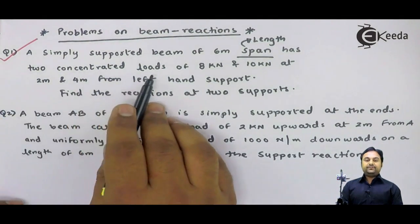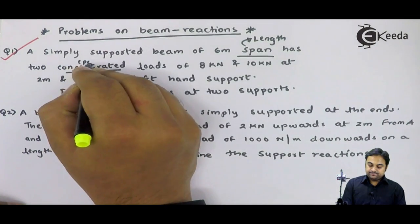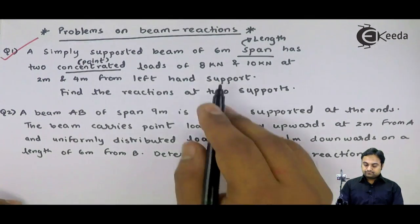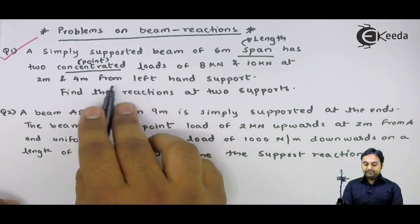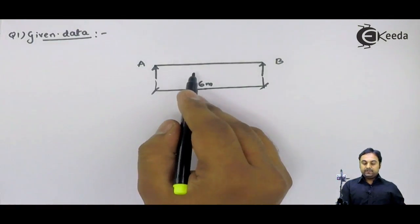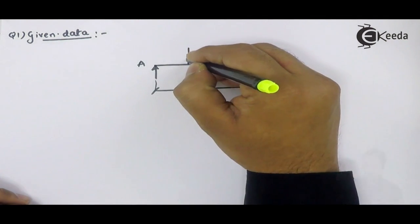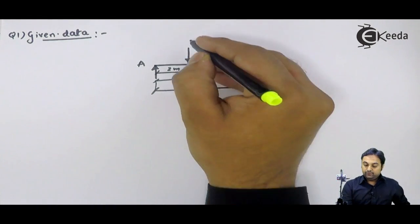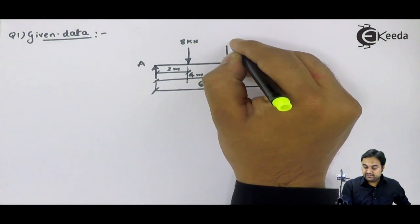The beam has two concentrated loads — meaning point loads of 8 kilo Newton and 10 kilo Newton at 2 meters and 4 meters from the left hand support. At 2 meters we have the 8 kilo Newton load, and at 4 meters from the left hand support we have the 10 kilo Newton load.